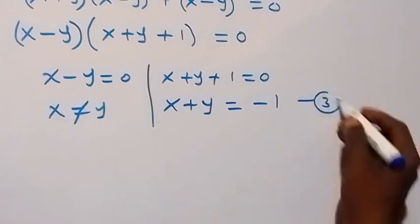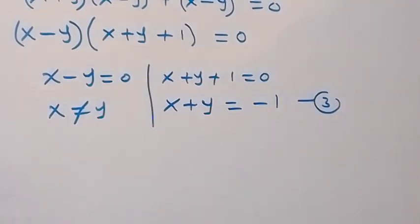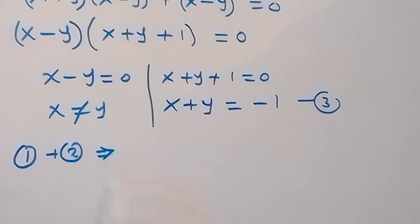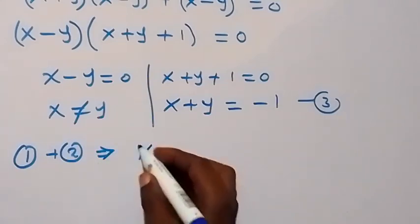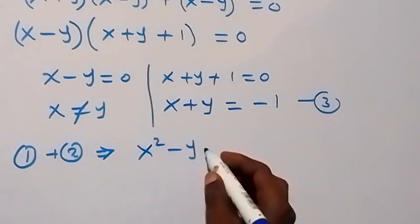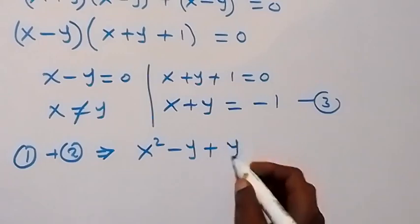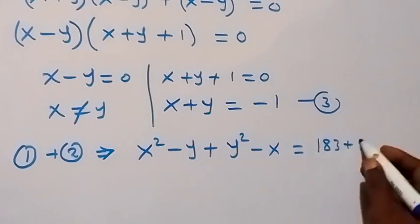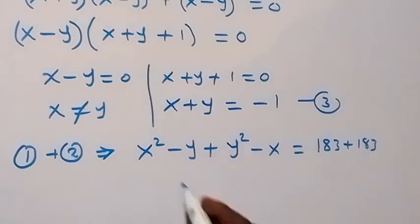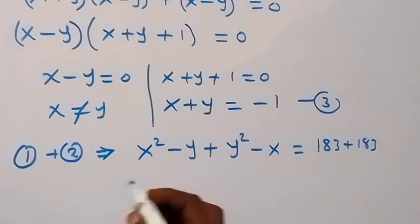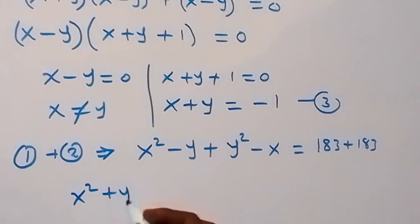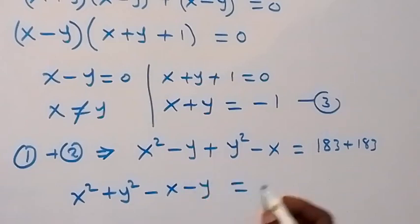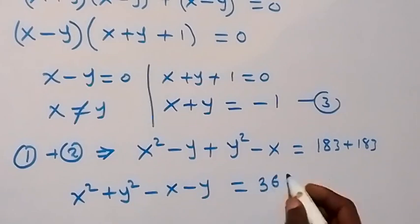Let's label this as equation 3. In the next step, let's add the two equations, that is equation 1 plus equation 2. This implies, from the left hand side: what we have in equation 1 is x squared minus y, then plus what we have in equation 2, that is y squared minus x. On the right hand side, that gives us 183 plus 183. This becomes x squared plus y squared, then minus x minus y.